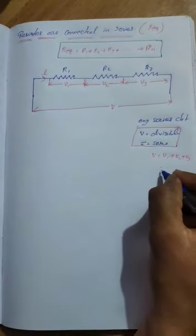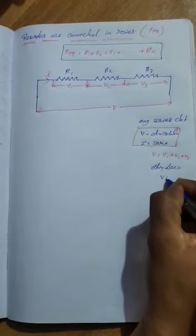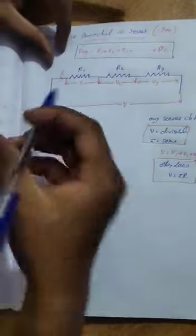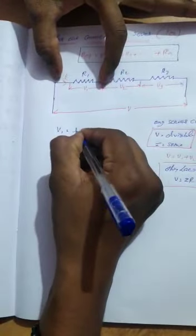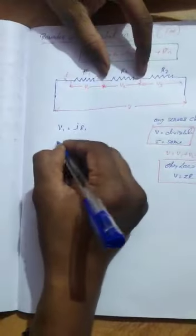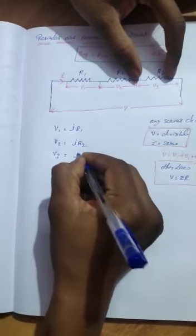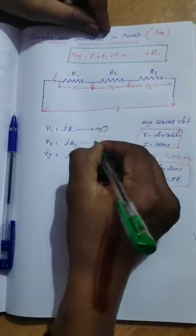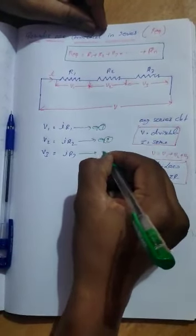From this, according to Ohm's law — V is equal to IR — V1 equal to I into R1, V2 equal to I into R2, V3 equal to I into R3. Take these as equation number 1, equation number 2, and equation number 3.